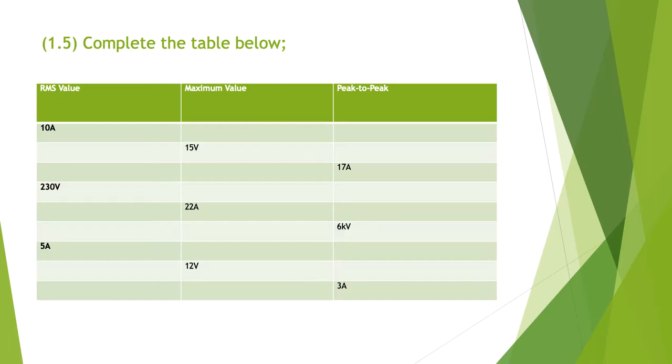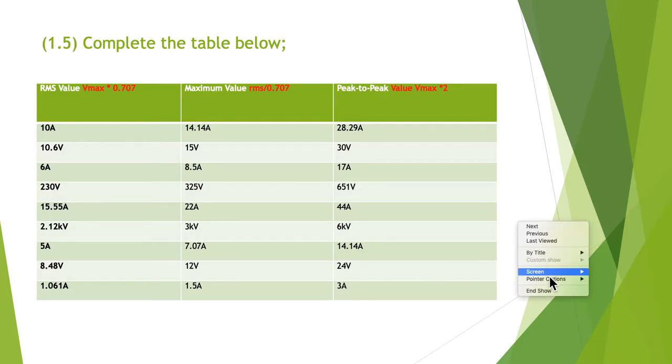Problem 1.5: This is just about completing the table and using your multiplication factors for RMS, peak to peak, and max. As a little hint, I've put in there VRMS equals Vmax times 0.707. The maximum value is the RMS divided by 0.707, and peak to peak is the Vmax times 2. It's just a matter of filling out the table, understanding what the multipliers were and their relationships.